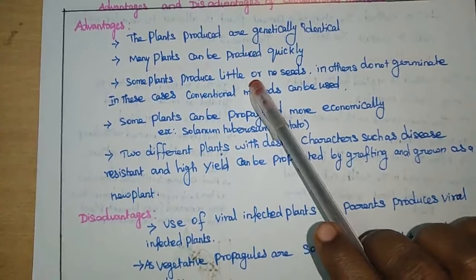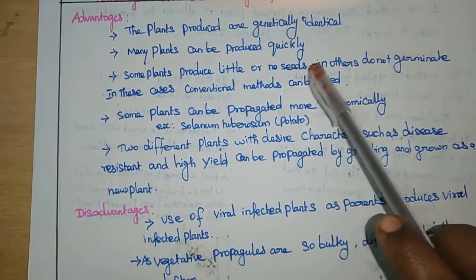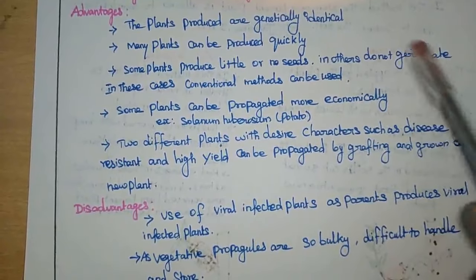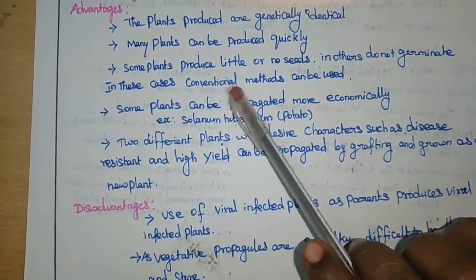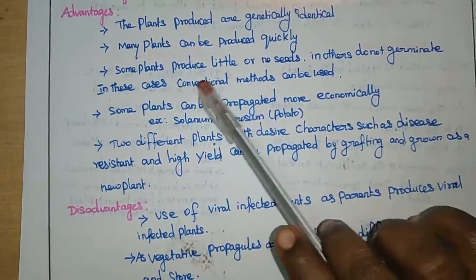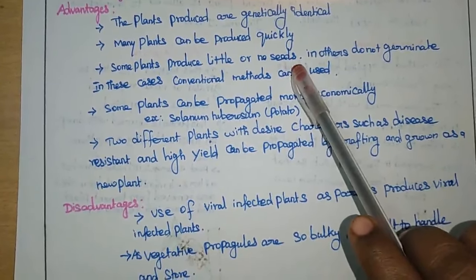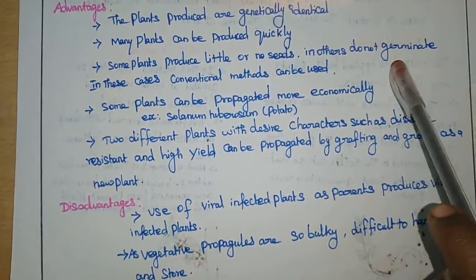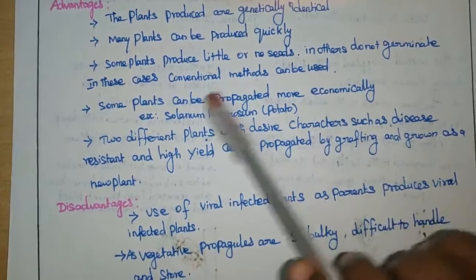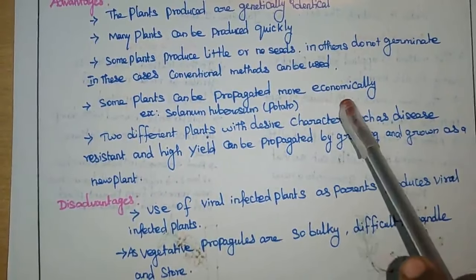Some plants produce little or no seeds, and in others the seeds do not germinate. In these cases, conventional methods can be applied — where there is no production of seeds, or very few seeds, or seeds are not germinating.